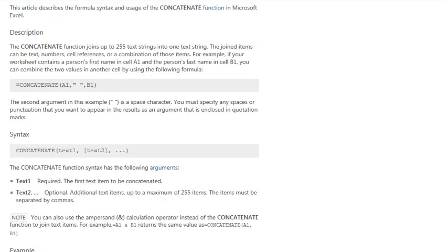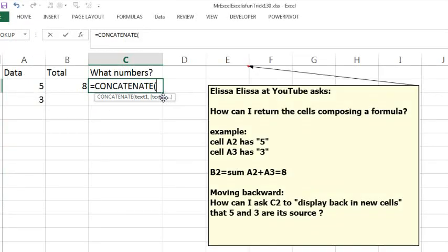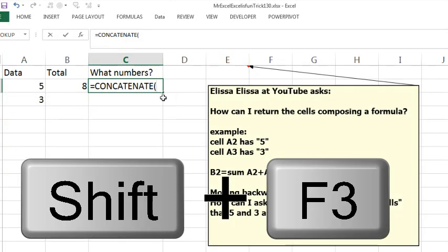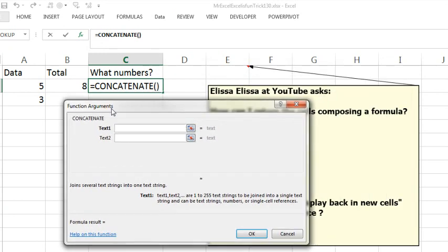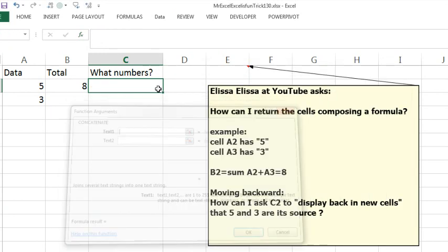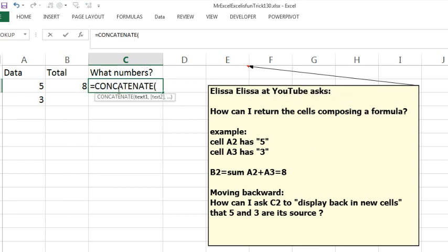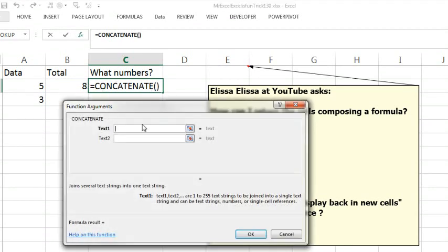I meant to go Shift F3, that opens up the function argument dialog box. By the way, escape. Equals con. This right here is the hot link to get to help. Shift F3 is the keyboard for insert function, and if you already have the function typed out, it'll jump right to the function argument dialog box. So the first thing is B2, and then space is space.